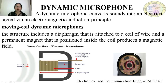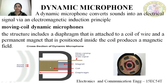The coil of wire consists of magnetic flux lines and produces an electric field consisting of electric flux lines. This is the cross-section of a dynamic microphone having four permanent magnets. The coil of wire is wound around this permanent magnet. The working principle of a moving coil dynamic mic is the electromagnetic induction principle.